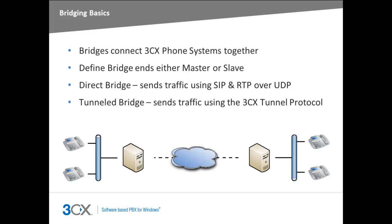To set up a bridge connection between two systems, the connection must be authenticated. To achieve this, one system must be designated as the master and the other as the slave. The master system will be listening for the slave system to connect with the correct username and password credentials. Once the connection is established, there is no difference between the master and slave systems — both can use the bridge connection equally.